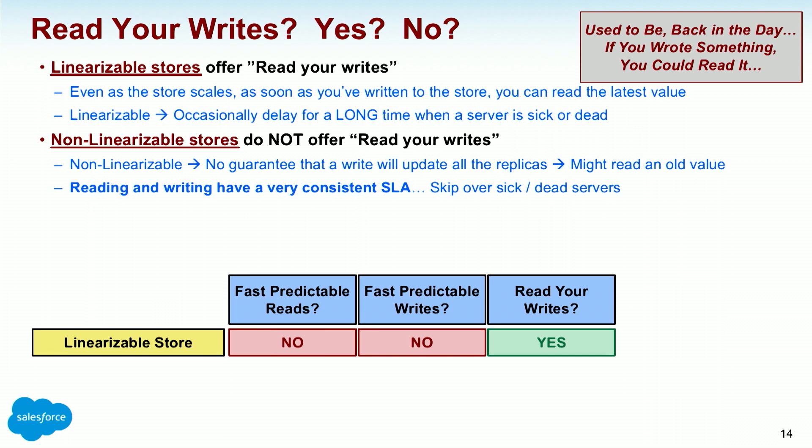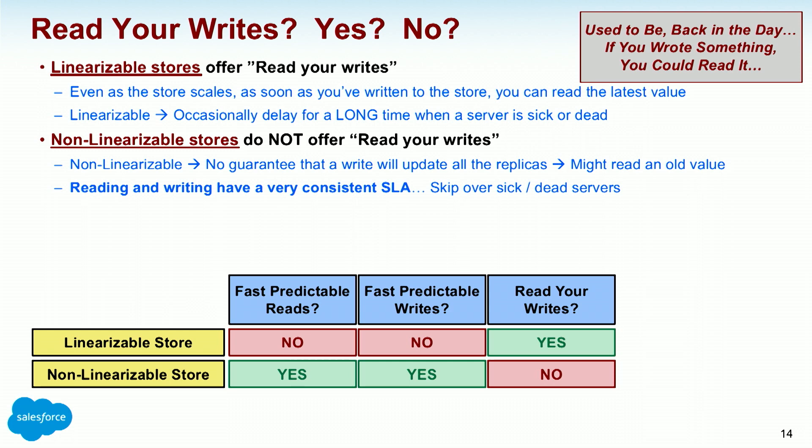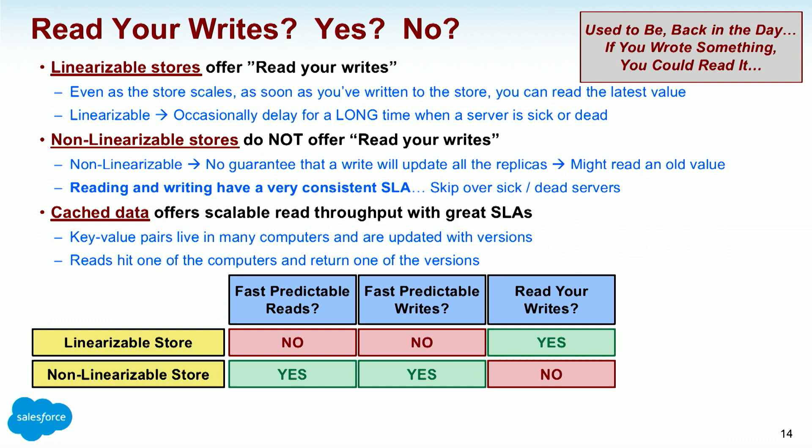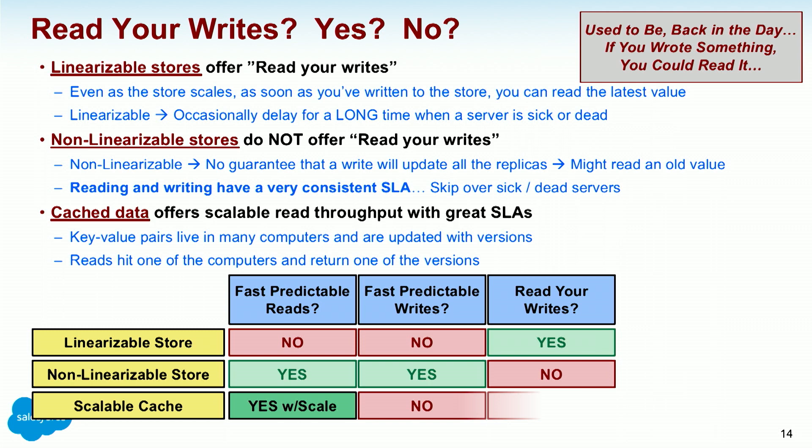In a non-linearizable store: fast predictable reads — yes; fast predictable writes — yes; read your writes — no. Cached data offers scalable read throughput with great SLAs. If I'm updating a key-value pair and caching it across 100 servers, sometimes I'll read the old value as the cache is updating — that's expected and valuable for certain business uses, though not for transactionally correct business state. Scalable cache: fast predictable reads yes with scale; fast predictable writes, not so much; read your writes, no. These are different stores for different uses.